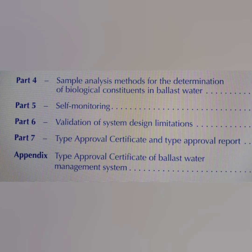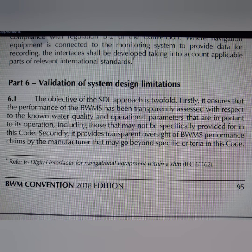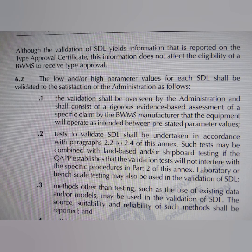Part 6 is about validation of system design limitations. The objective of the system design limitation approach is twofold: first, it ensures the performance of the ballast water management system has been transparently assessed with respect to known water quality and operational parameters important to its operation, including those not specifically provided in this code. Secondly, it provides transparent oversight of the ballast water management system performance claims by manufacturers that may go beyond specific criteria in this code. Validation of system design limitation yields information reported on the type approval certificate but does not affect the eligibility of the system to receive type approval.